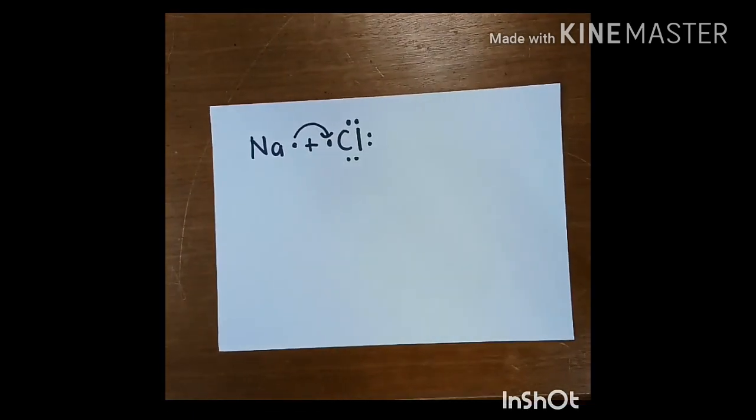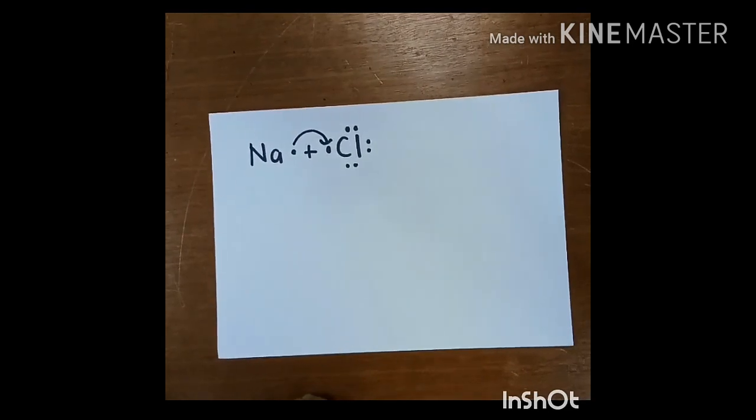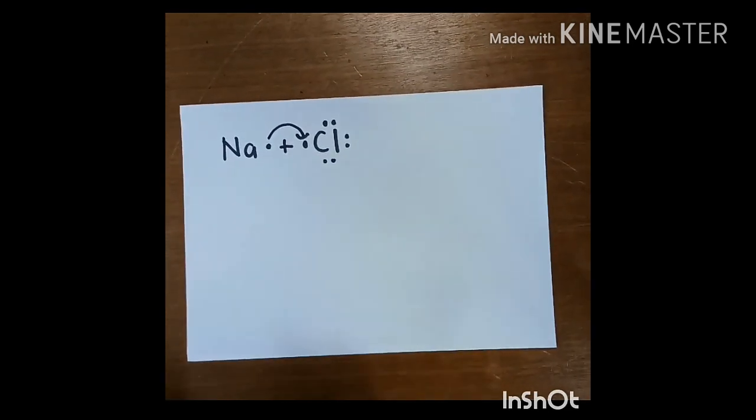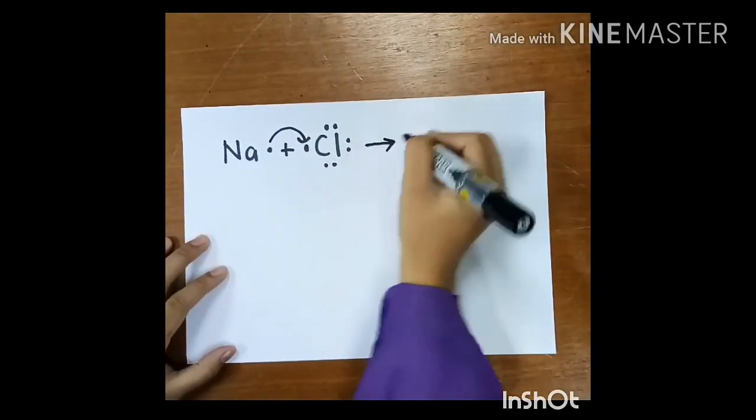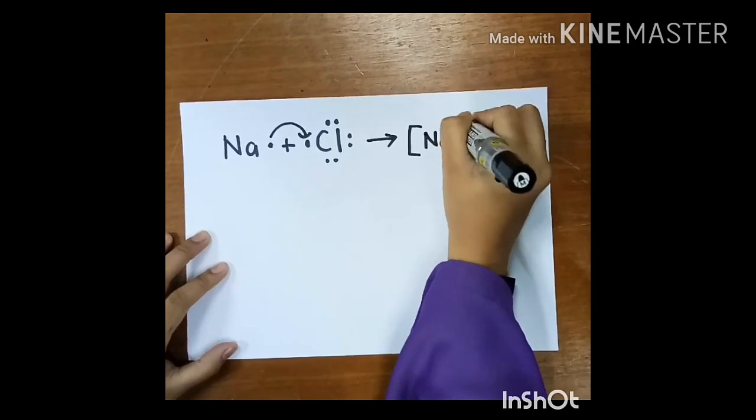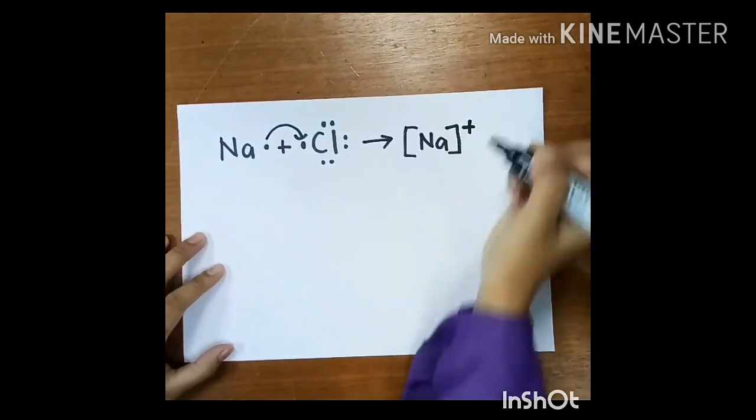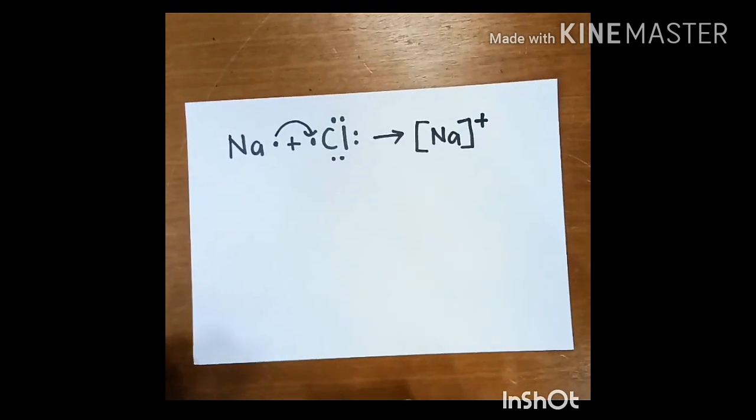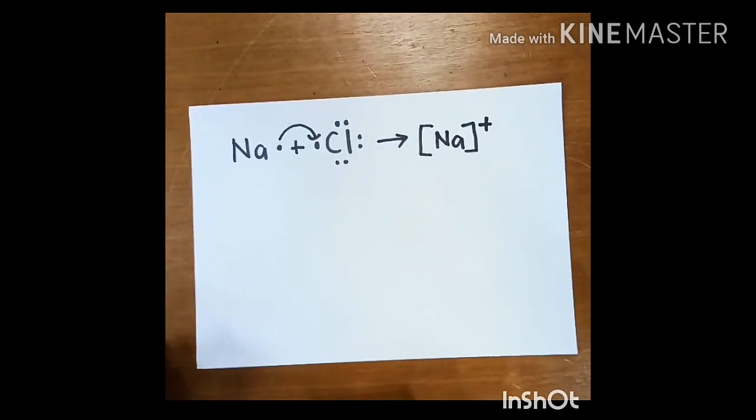In this case, when sodium atom donates one electron, ion Na+ is formed. When chlorine atom accepts one electron, ion Cl- is formed.